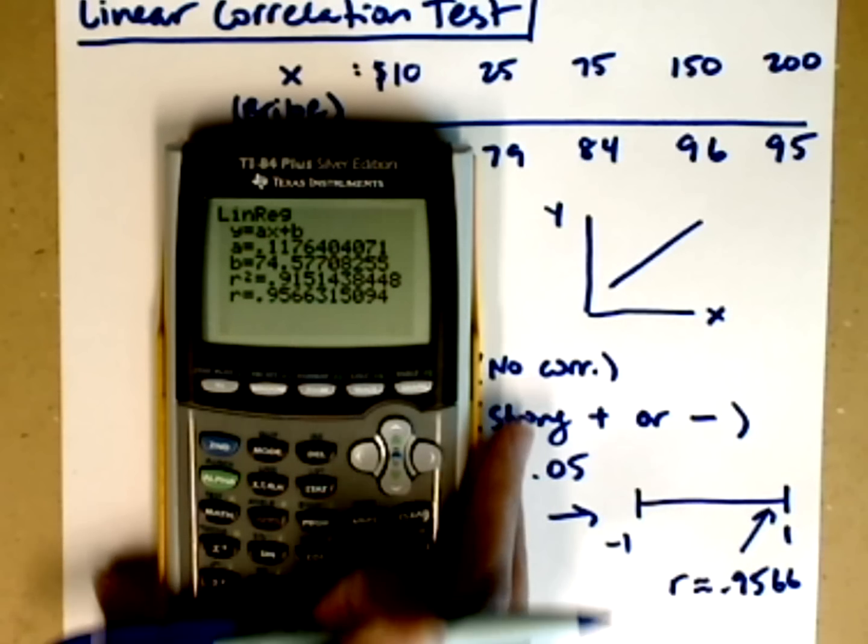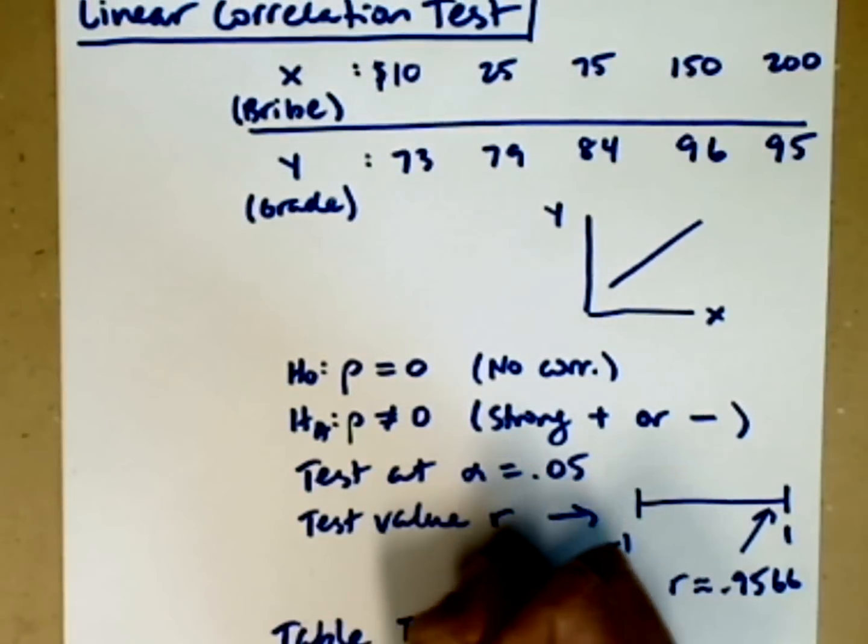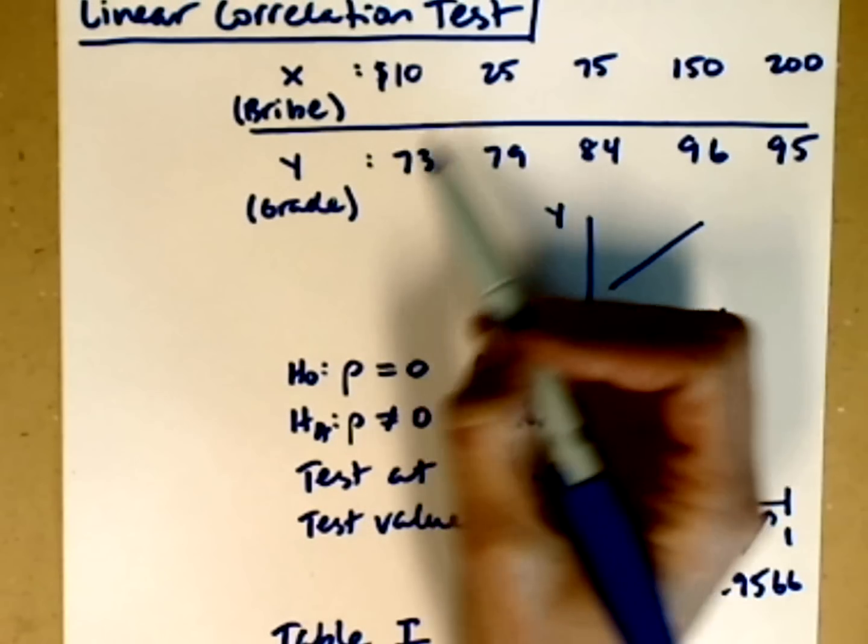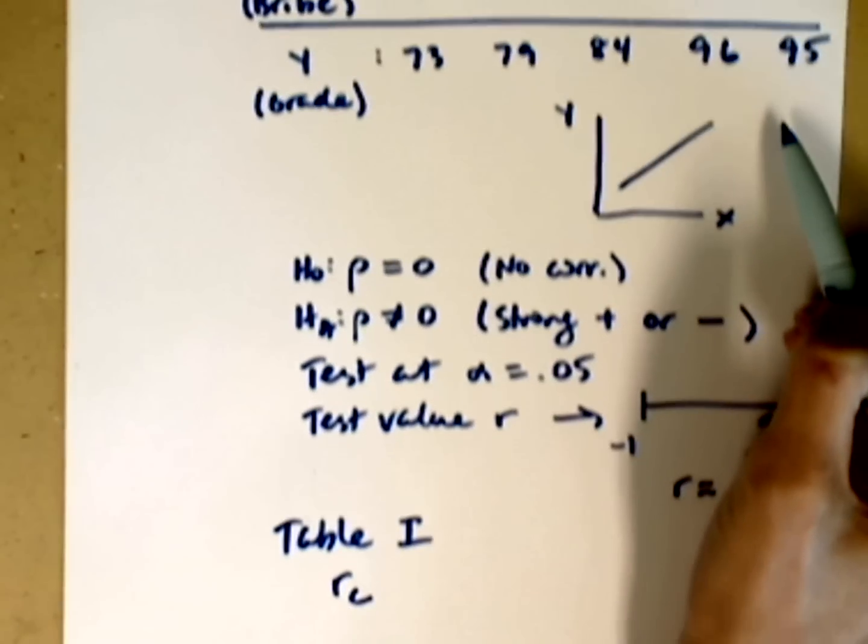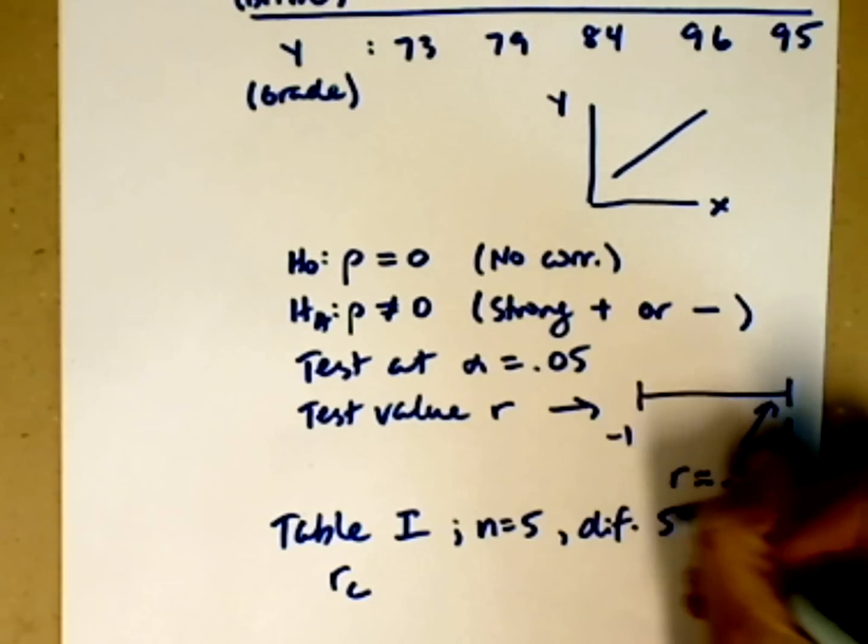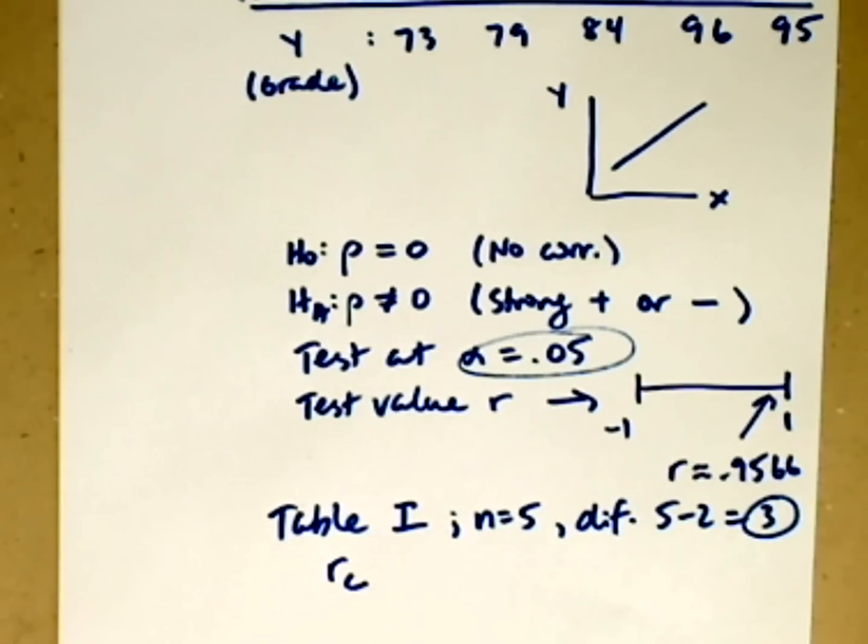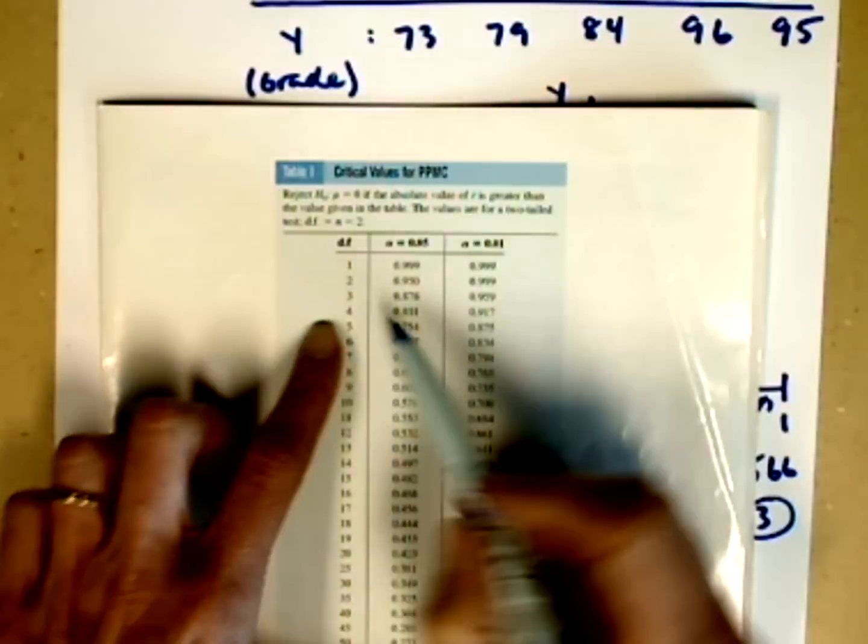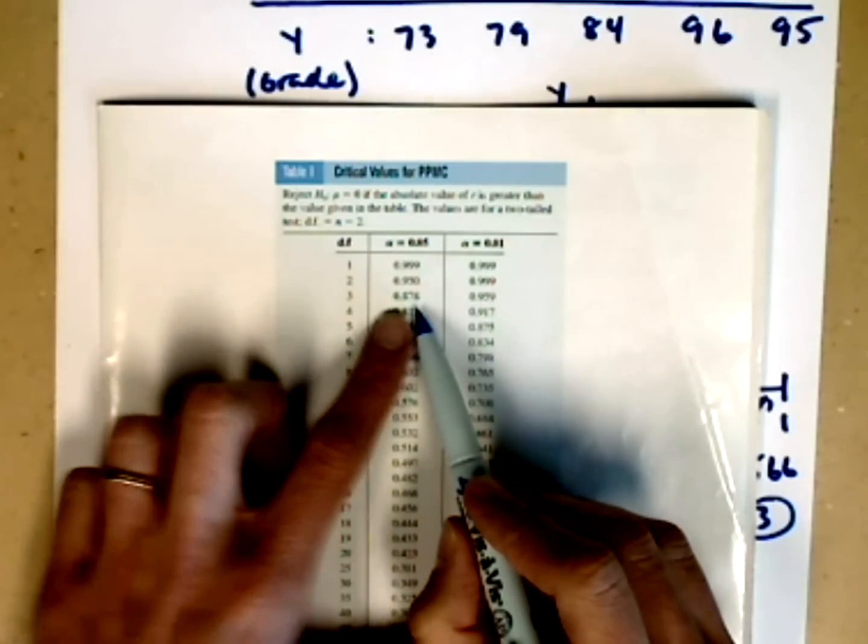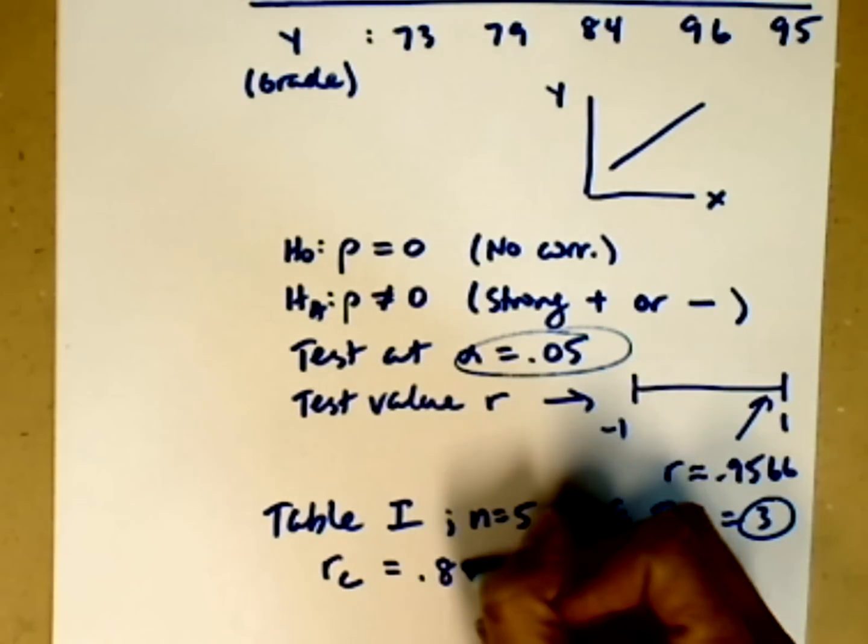We need to compare this with our critical value. To compare this with our critical value, we're going to use table I. To get the critical value, we have how many pairs? 1, 2, 3, 4, 5 pairs. So N equals 5. So my degrees of freedom is 5 minus 2, which is equal to 3. We're going to look up 3 degrees of freedom, and I established alpha to be .05. So here on table I, I have 3 degrees of freedom, alpha equal .05. I am positive you can't read that, so I'll read it to you. .878 is going to be our cutoff. From table I, our critical value is .878.